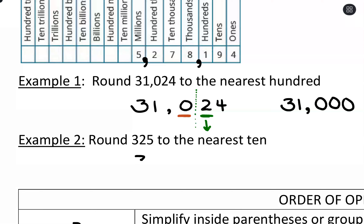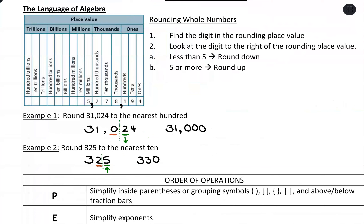Let's say we have 325 and we're rounding to the nearest ten. We have our rounding place value and we look at the digit to the right. Because that's a five, we're going to be rounding up. That three stays in the hundreds place, that two in our rounding place value bumps up to a three, and then everything else turns into zeros. So 325 rounded up to 330. We'll do a lot more with rounding, especially with decimals, in later videos.